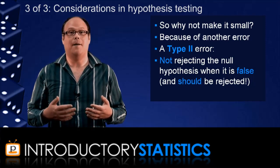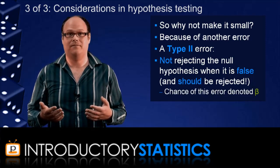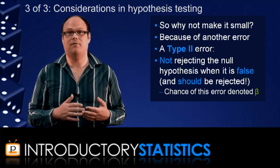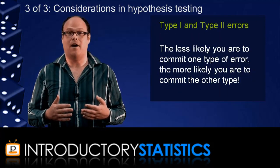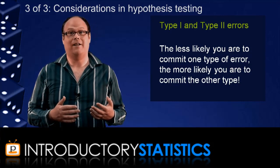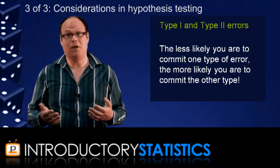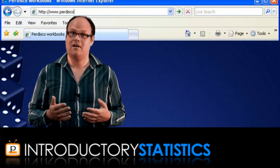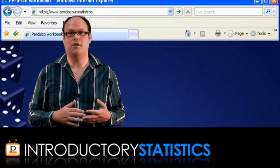And alpha and beta are inversely proportional at a fixed sample size. So, the less likely you are to commit one kind of error, the more likely you are to commit the other. You'll get more familiar with the two types of errors as you get practice seeing them in tests. So, let's try a question from the Pedisco workbook.